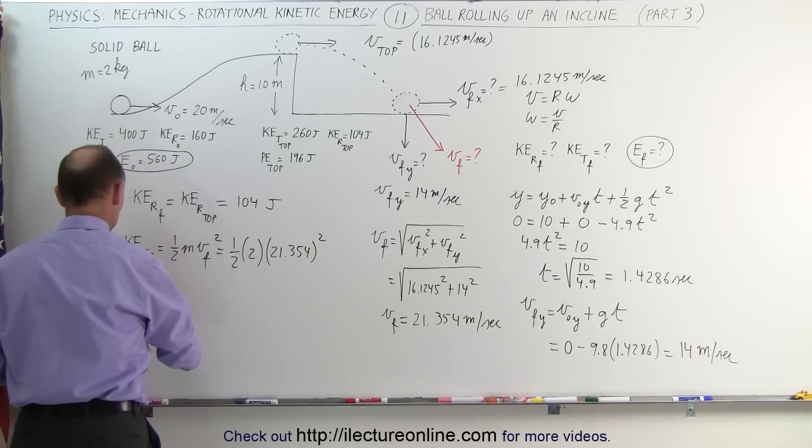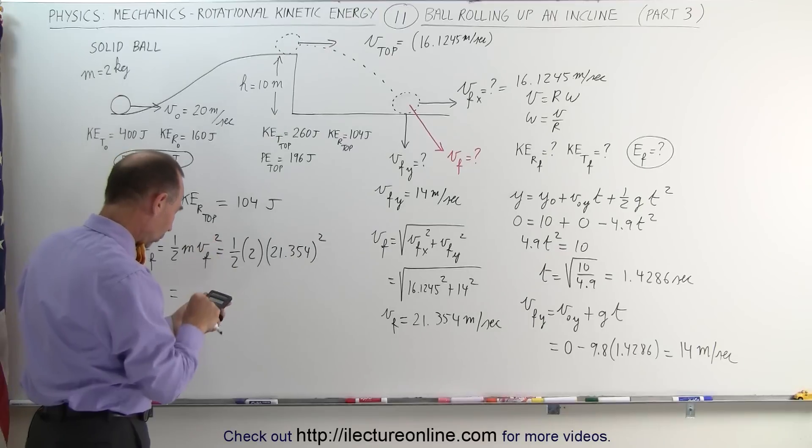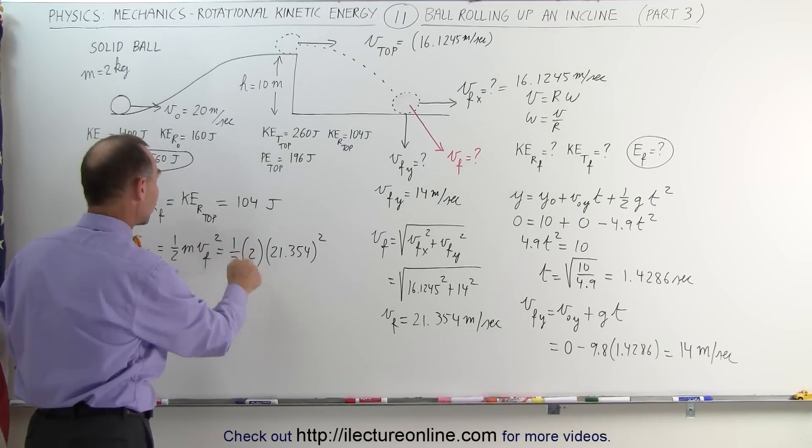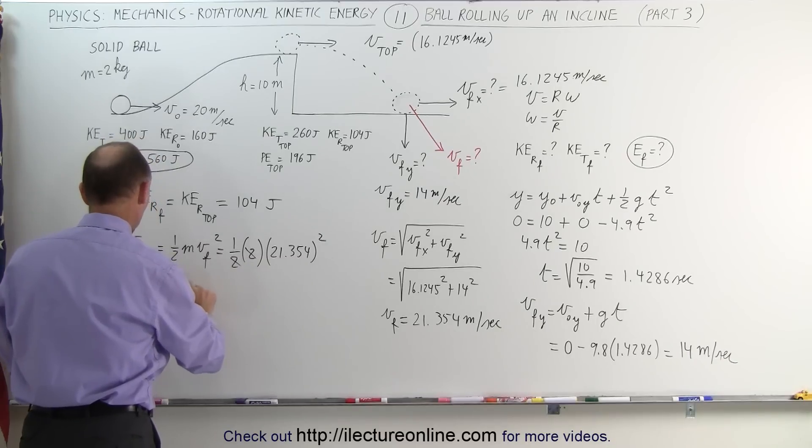The kinetic energy translational final is squaring that number times one, because 2 times one-half, that cancels out, and that gives us 456 joules.